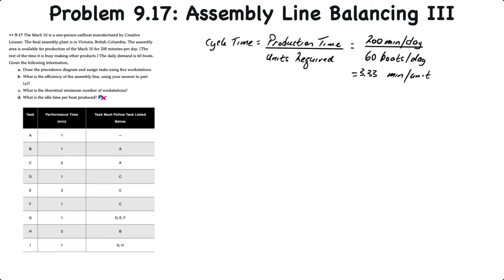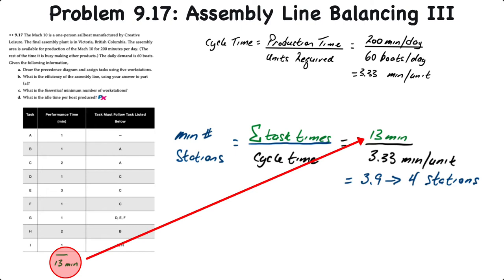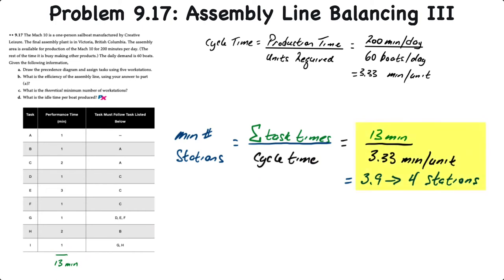Then we can calculate the minimum number of workstations by taking the sum of the task times, which is 13 minutes, by adding up all of the performance times in the table. We divide that by the 3.33 minutes per unit cycle time. That gives us 3.9, or four workstations.